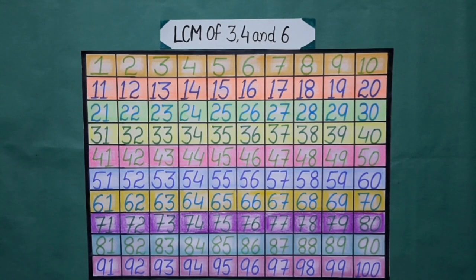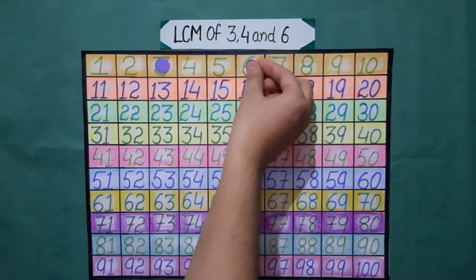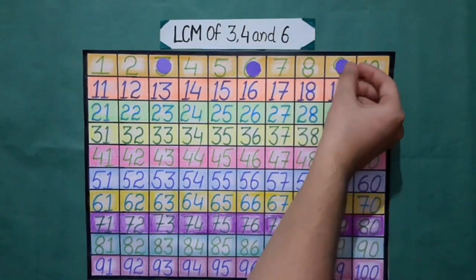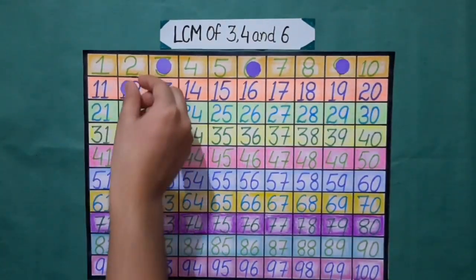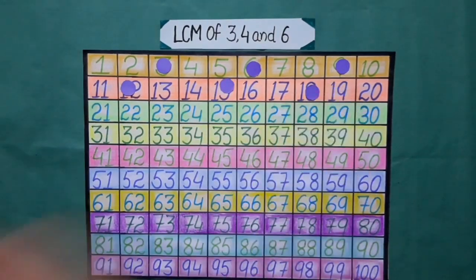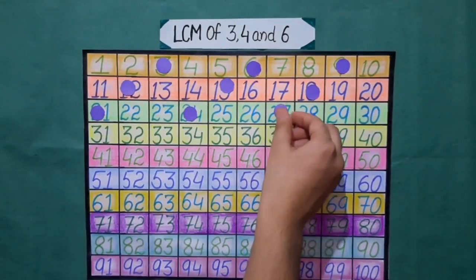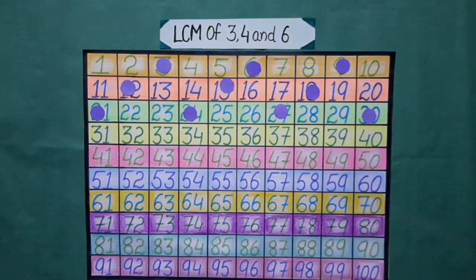Now you recite the table of 3 along with me. 3 ones are 3, 3 twos are 6, 3 threes are 9, 3 fours are 12, 3 fives are 15, 3 sixes are 18, 3 sevens are 21, 3 eights are 24, 3 nines are 27, 3 tens are 30.